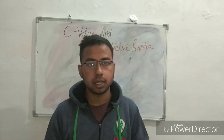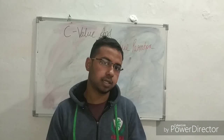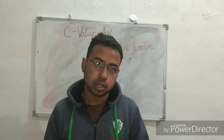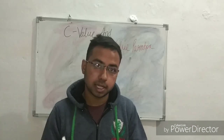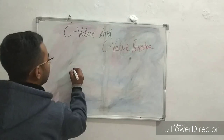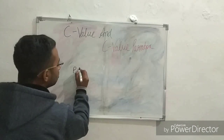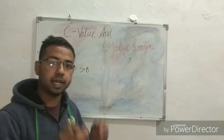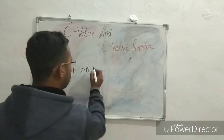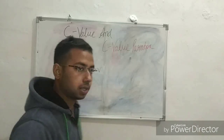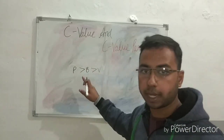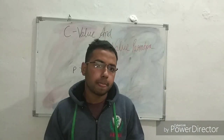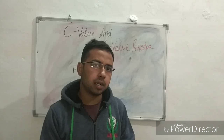The more complex the organism, the more C value or genome content that organism has. For example, an elephant contains more genome than other organisms. Similarly, protozoa contains more genome or C value than bacteria, and bacteria contains more genome or C value than a virus, as the complexity of protozoa is greater than bacteria, and bacteria has more complexity than a virus.